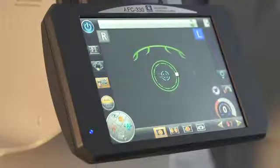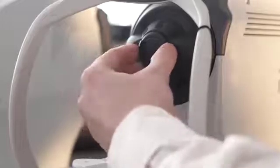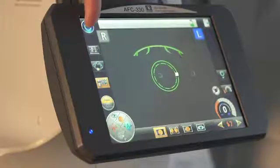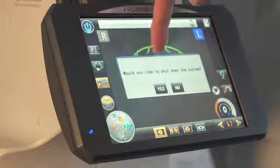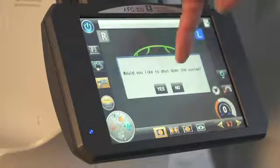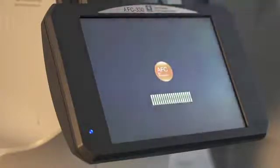When you have finished using the AFC330, remember to replace the lens cap over the objective lens. You then press the power button, and it will ask you if you wish to shut down. If you press yes, you then need to wait a few seconds for it to boot down. And at that point it will say it is okay to turn off the power.